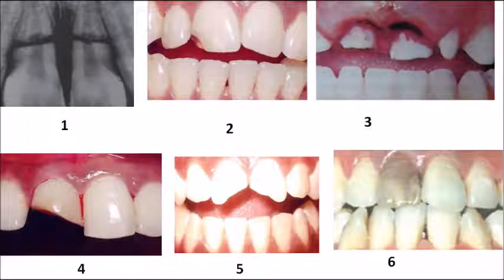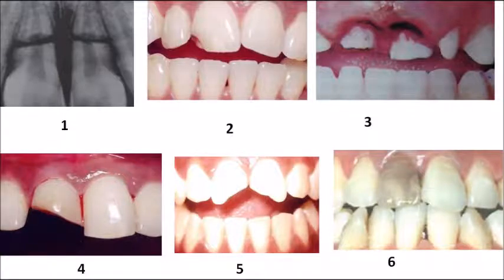The sixth picture shows discoloration of the tooth, which belongs to Ellis Class 4. From this exercise we identified five important MCQ points: Class 4 for non-vitality, Class 9 for deciduous tooth fracture, and Class 6 for root fracture are the most commonly asked questions in exams.